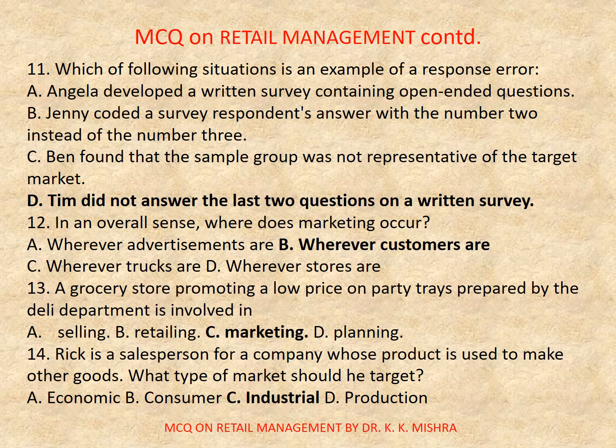Question number 14: Rick is a salesperson for a company whose product is used to make other goods. What type of market should he target? a) economic, b) consumer, c) industrial, d) production. Correct option is c) industrial.